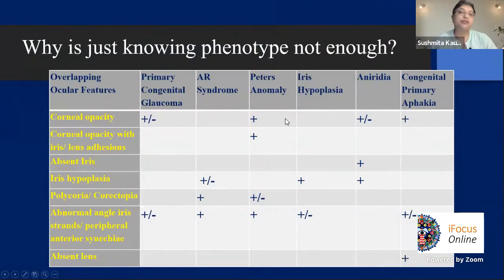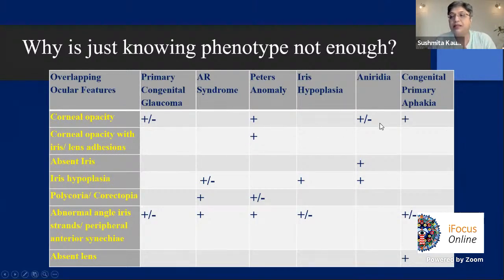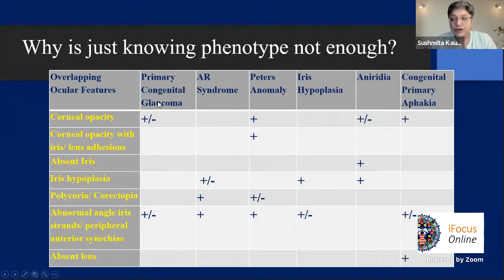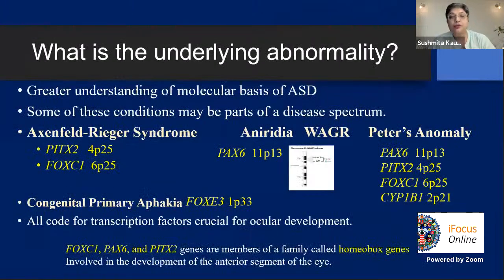Why is knowing the phenotype alone not enough? Features overlap enormously. Corneal opacity can occur in PCG, Peters, aniridia, and congenital primary aphakia. Corneal opacity with iris adhesions is only in Peters. You need to put the bits of the puzzle together across all these overlapping features and syndromes to determine what's going on.